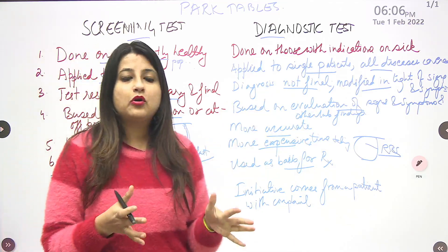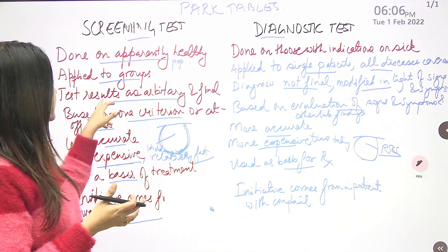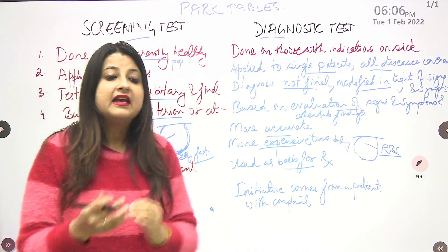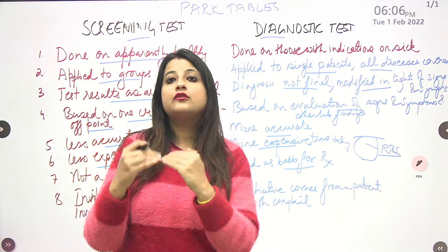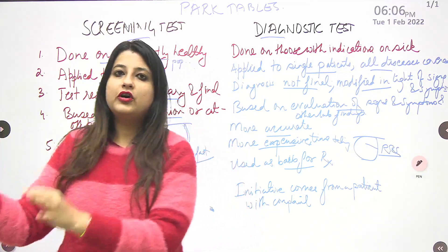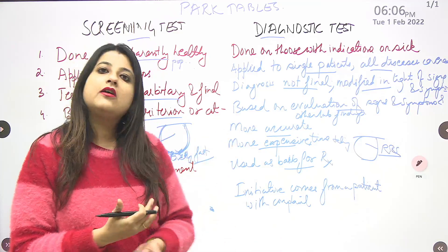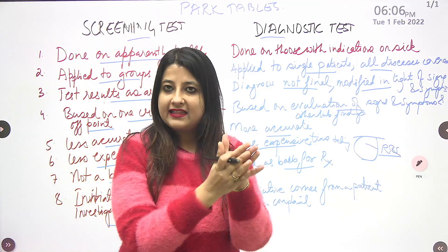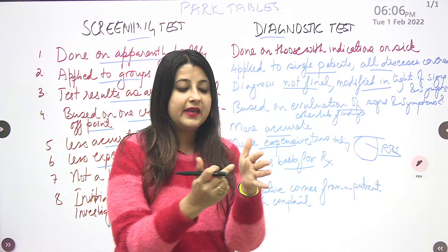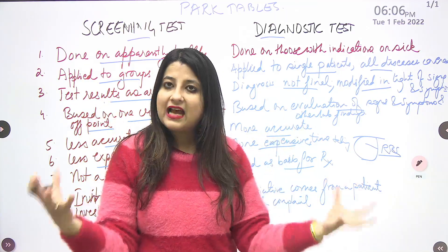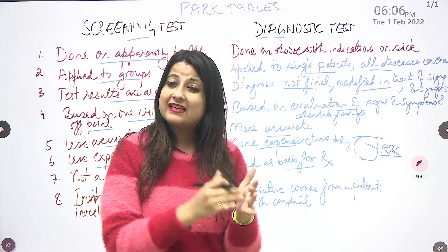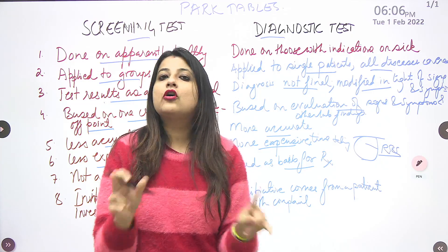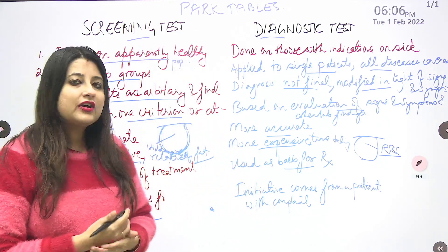Remember this chart — it is very important. The most important points: test results are final and based on one cutoff criterion. For example, more than 140/90 being positive is the meaning of one cutoff criterion. Screening is applied on apparently healthy populations in larger groups, so it has to be less time-consuming and less expensive. At the same time, it cannot be used as a basis for treatment.